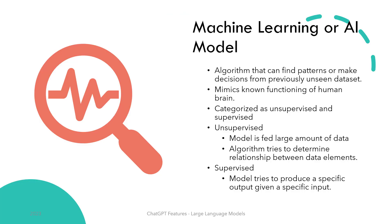A machine learning model is an algorithm that can find patterns or make decisions from previously unseen data. Those learning algorithms try to mimic what neuroscientists believe is the way our brain works. They are broadly categorized as unsupervised and supervised learning algorithms.